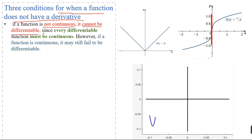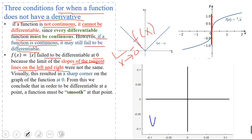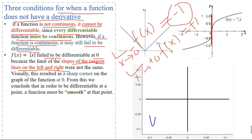Three conditions for when a function does not have a derivative: First, if a function is not continuous it cannot be differentiable, since every differentiable function must be continuous. However, if a function is continuous it may still fail to be differentiable. f(x) = |x| fails to be differentiable at x = 0 because as x approaches 0 from the left the slope is negative, and as x approaches 0 from the right the slope is positive.